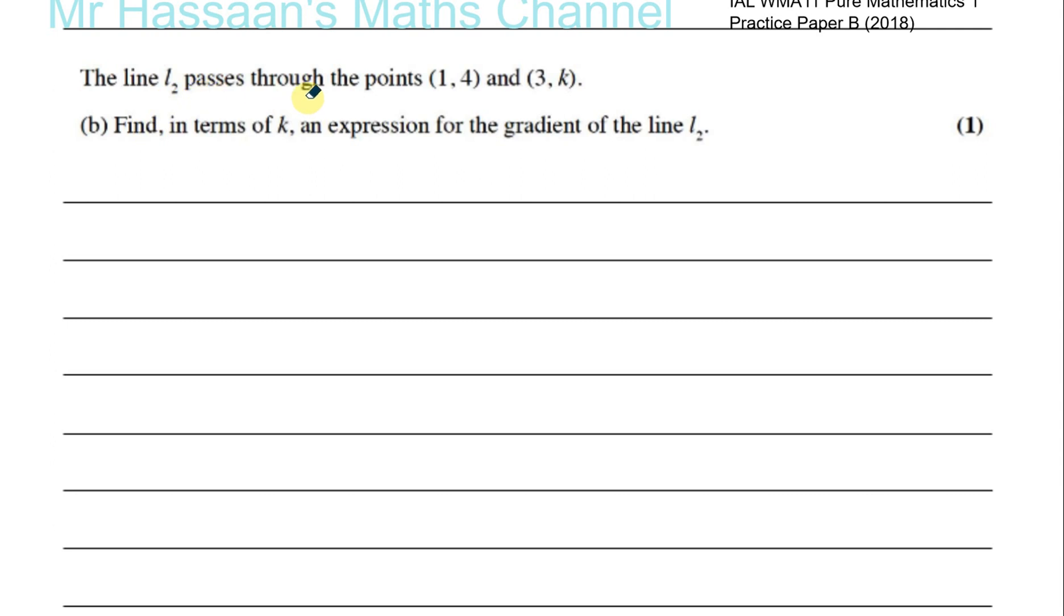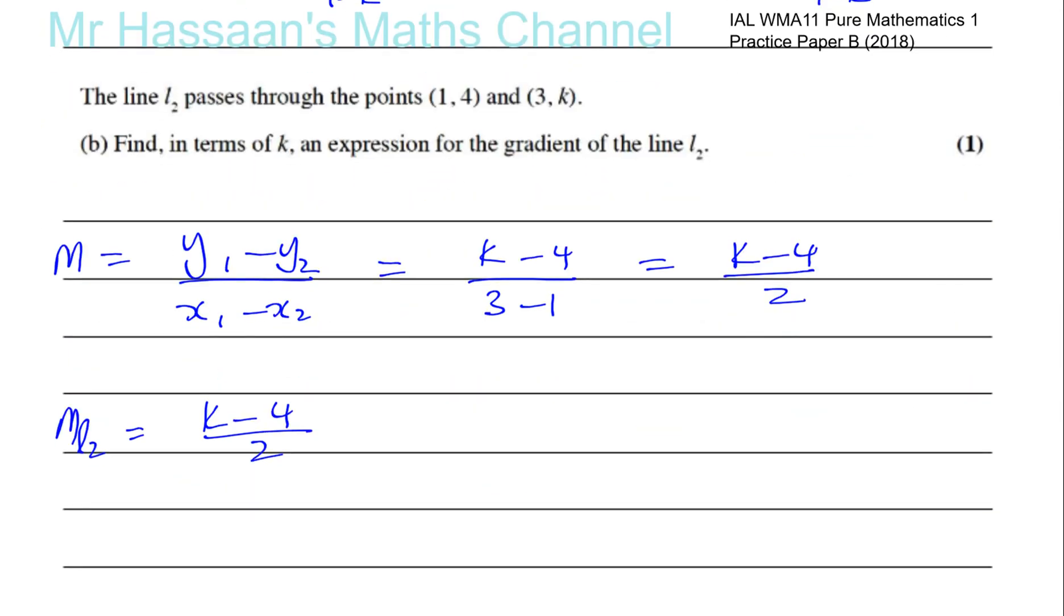Now, part B, line L2 passes through these two points. Let's find in terms of K an expression for the gradient of the line. Well, we know from our work in IGCSEs that the gradient is equal to the change in the Y coordinates over the change in the X coordinates. So here the change in the Y coordinates, let's start with this one first. K minus 4 over 3 minus 1, which gives you (K minus 4) over 2. So the gradient of line 2 is equal to (K minus 4) divided by 2. So that's the gradient of line 1 and the gradient of line 2.